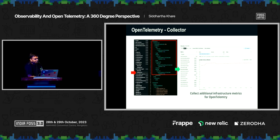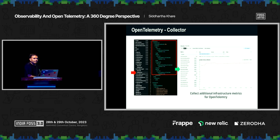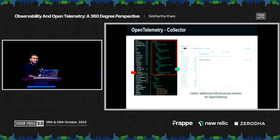The collector and OpenTelemetry are not just limited to your application stats. You can collect your infrastructure data as well. This is one example from my application where I'm collecting system-level information, and once the data gets exported, this is how I can see the memory utilization.